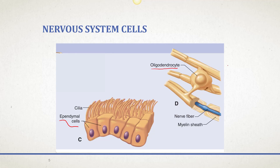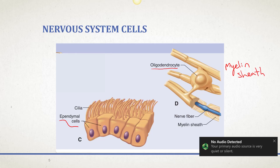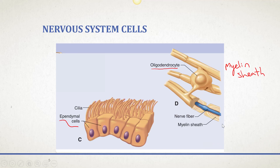Oligodendrocytes make up the myelin sheath in the central nervous system. When they make up this myelin sheath, they're going to insulate and electrically protect these neurons so that nerve impulses can be transmitted quickly. Ions go in, ions go out, and if they were not electrically insulated, they could just float away freely. It also allows for rapid jumps between nodes. If these oligodendrocytes get damaged, nerve impulse is slowed.